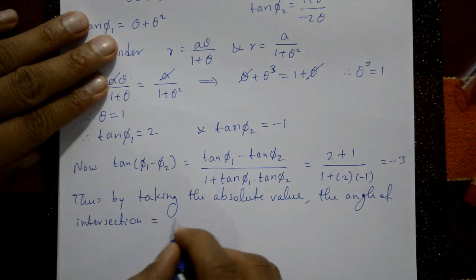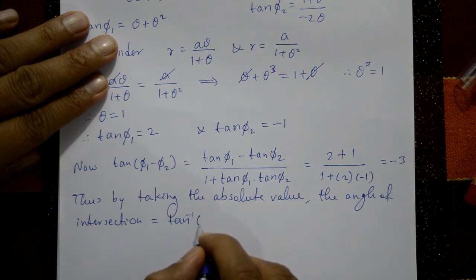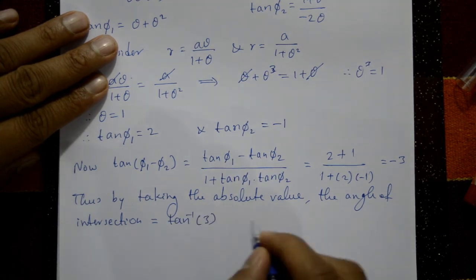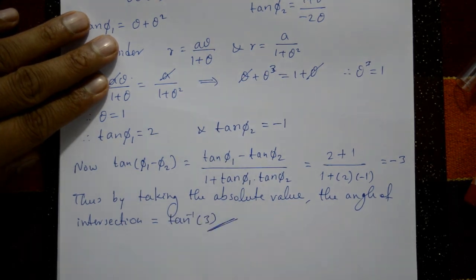Taking the absolute value, the angle of intersection is tan⁻¹(3). This is the required solution.